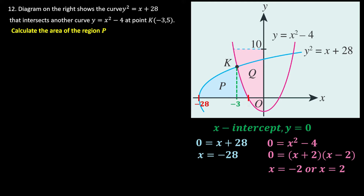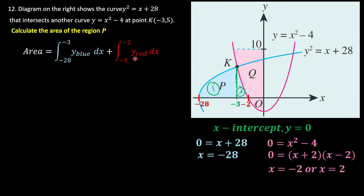Since we need the negative root, x = -2 is the relevant answer. The blue color curve equation y² = x + 28 needs to be expressed as y, so squaring both sides gives y = √(x + 28).